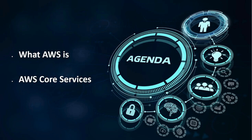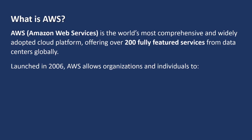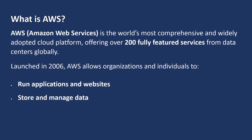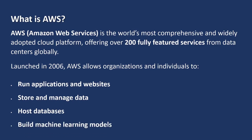So let's begin by answering the most important question: what is AWS? AWS is Amazon Web Services — the world's most comprehensive and widely adopted cloud platform, offering over 200 fully featured services from AWS data centers globally. AWS launched in 2006, and it allows organizations and individuals to run applications and websites, store and manage data, host databases, and build machine learning models.